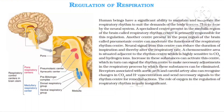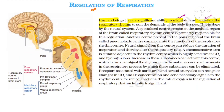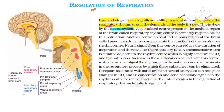Hello students, welcome back to the channel. In this video, we are going to study about the regulation of respiration. Human beings have a significant ability to maintain and moderate respiratory rhythm so that it can fulfill the demand of the body tissues. We know how to maintain and moderate our respiratory rhythm. How is it done? It is done by the neural system.